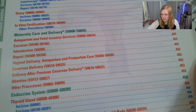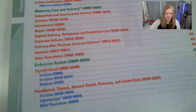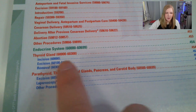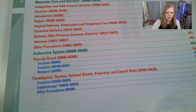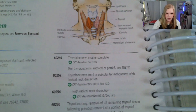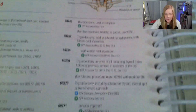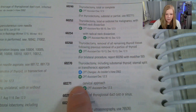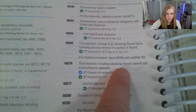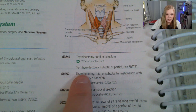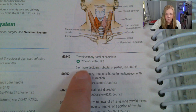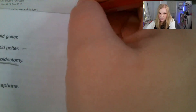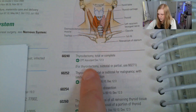You can also check the code in the table of contents — the endocrine system section covers procedures on the thyroid gland. Code 60240 is thyroidectomy, total or complete. The other option was 60271, thyroidectomy including substernal thyroid, cervical approach. We didn't do the substernal thyroid — it was just total thyroidectomy. The notes say for thyroidectomy subtotal or partial use 60212, but that's not what we did. So we're going with 60240.